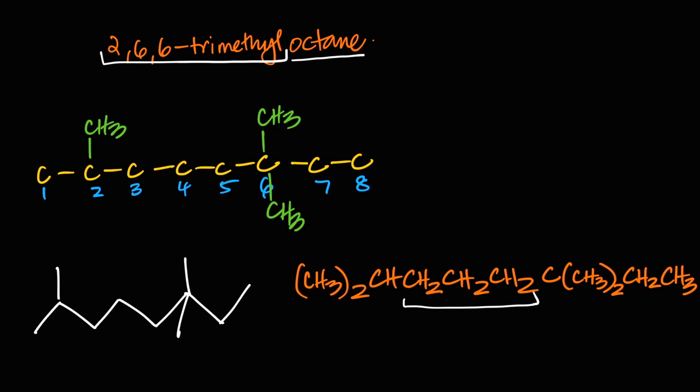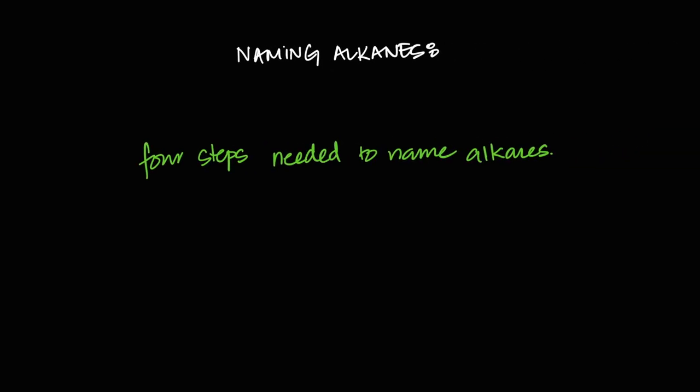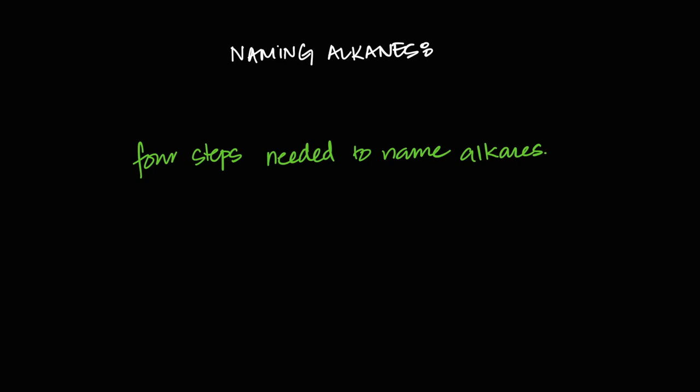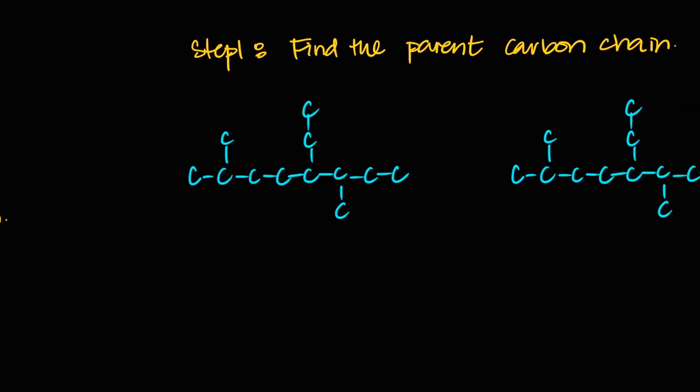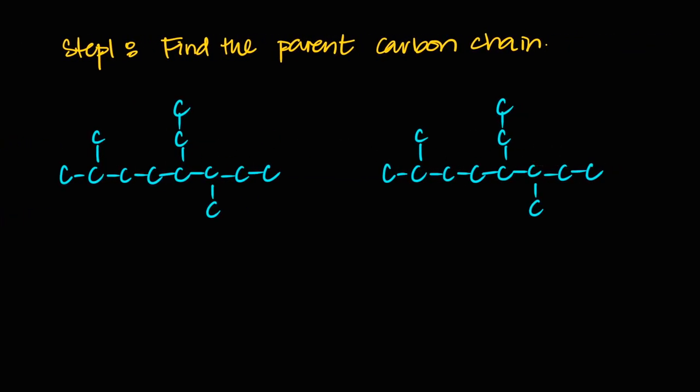Now let's name some already-drawn alkanes. There are four steps to naming alkanes. Step one: find the parent carbon chain. Your job is to find the longest unbroken carbon-carbon chain. This is done by placing a pencil on one end and, without lifting it, counting carbon atoms in one direction.